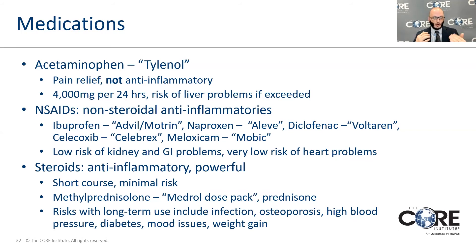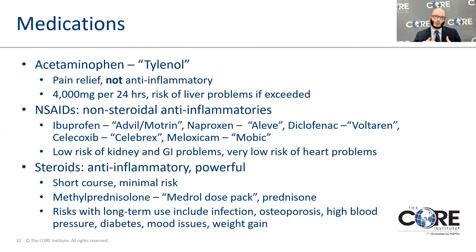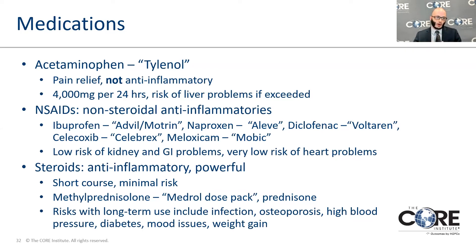Prescription-strength anti-inflammatories — the more popular ones are Voltaren, Celebrex, and Mobic or Meloxicam. These newer prescription-strength anti-inflammatories are thought to have a decreased side effect profile on stomach irritation. Anti-inflammatories have a low risk of heart problems and a low risk of kidney issues in patients with underlying kidney problems. We always recommend taking these with food to minimize GI irritation.